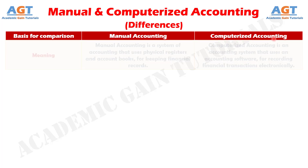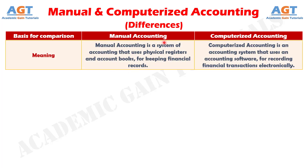Difference number 1. Manual accounting refers to the accounting method in which physical registers for journal and ledger, vouchers and account books are used to keep a record of the financial transactions. On the other hand, computerized accounting implies the method of accounting which uses an accounting software or package to record the monetary transactions which happen to an organization.